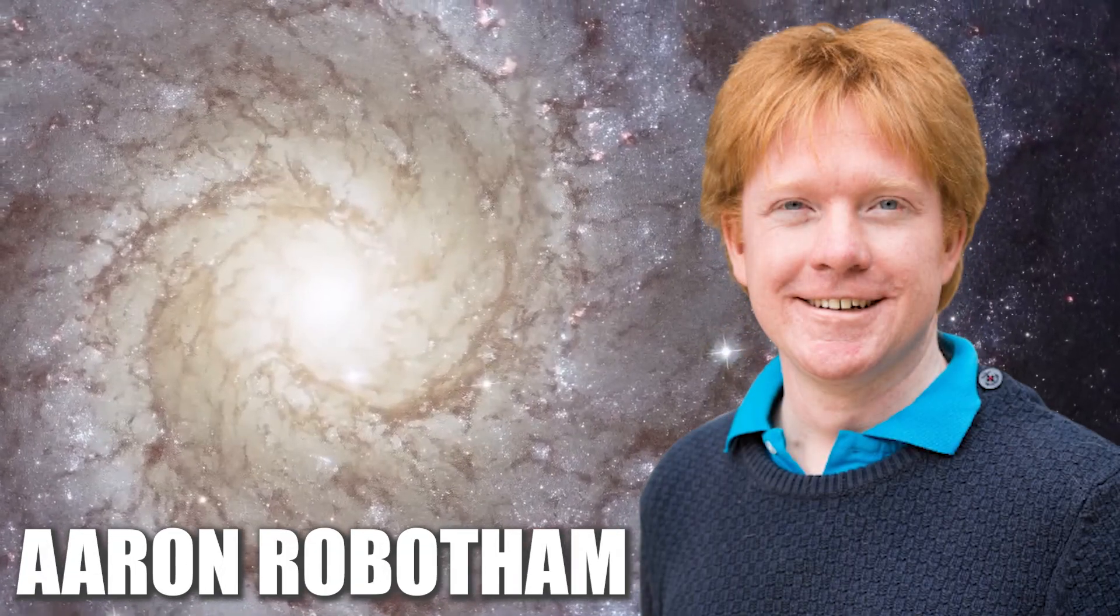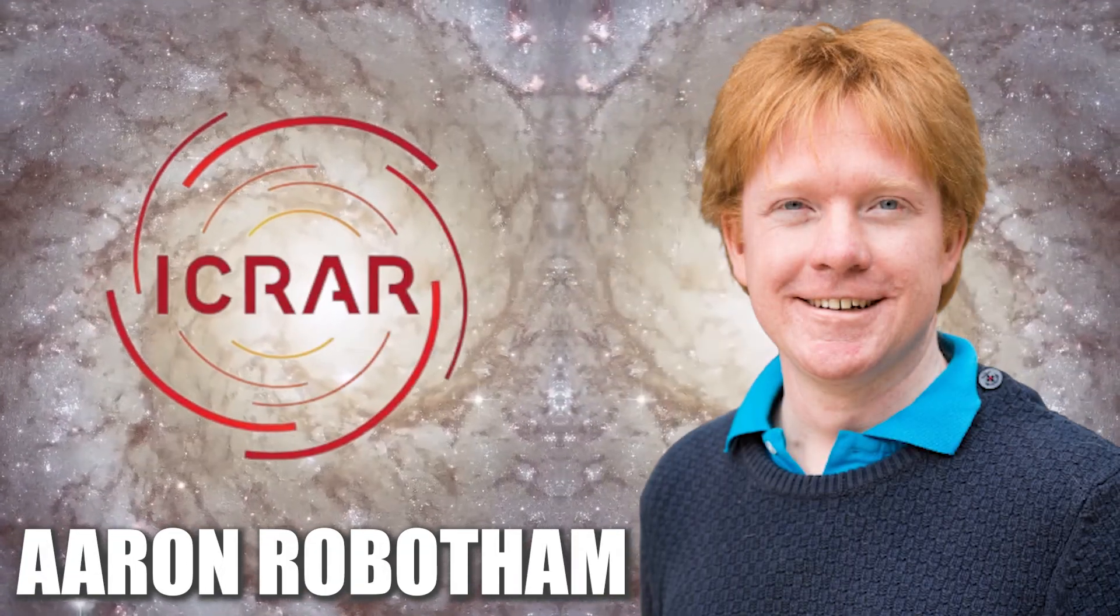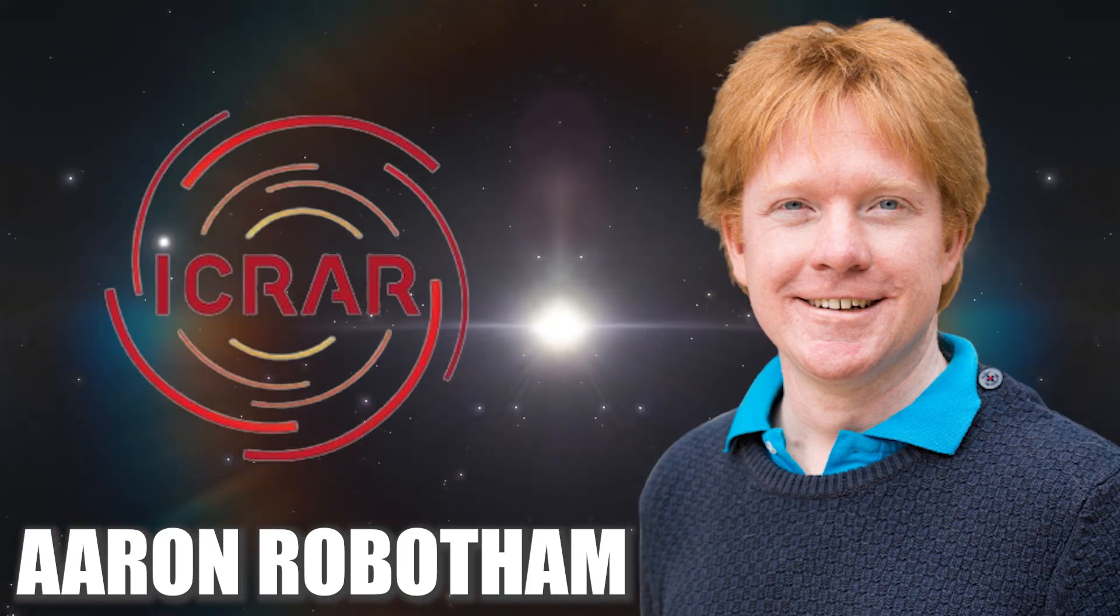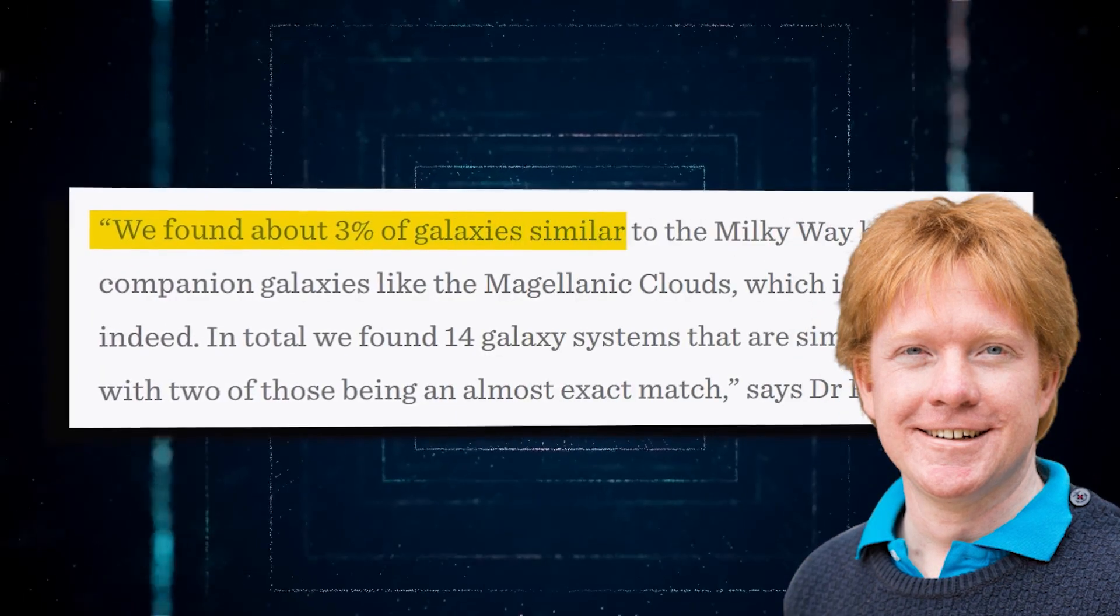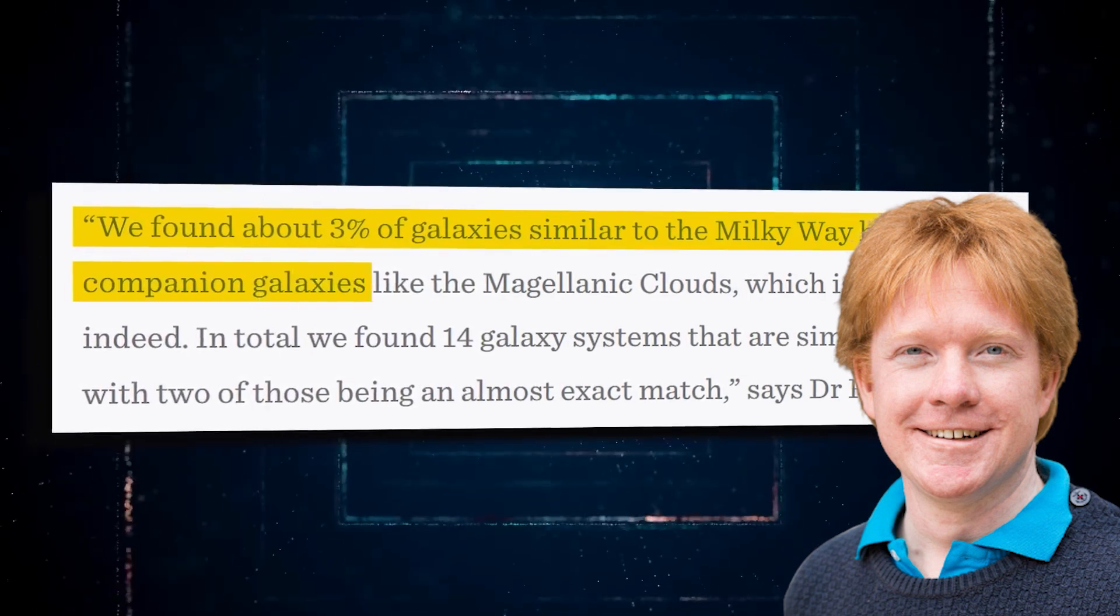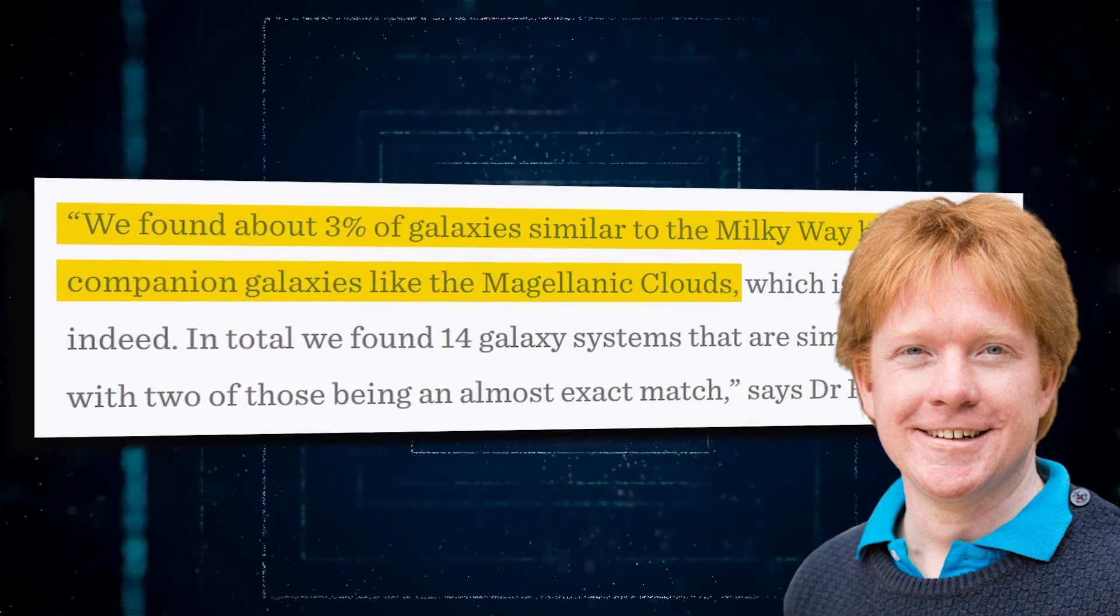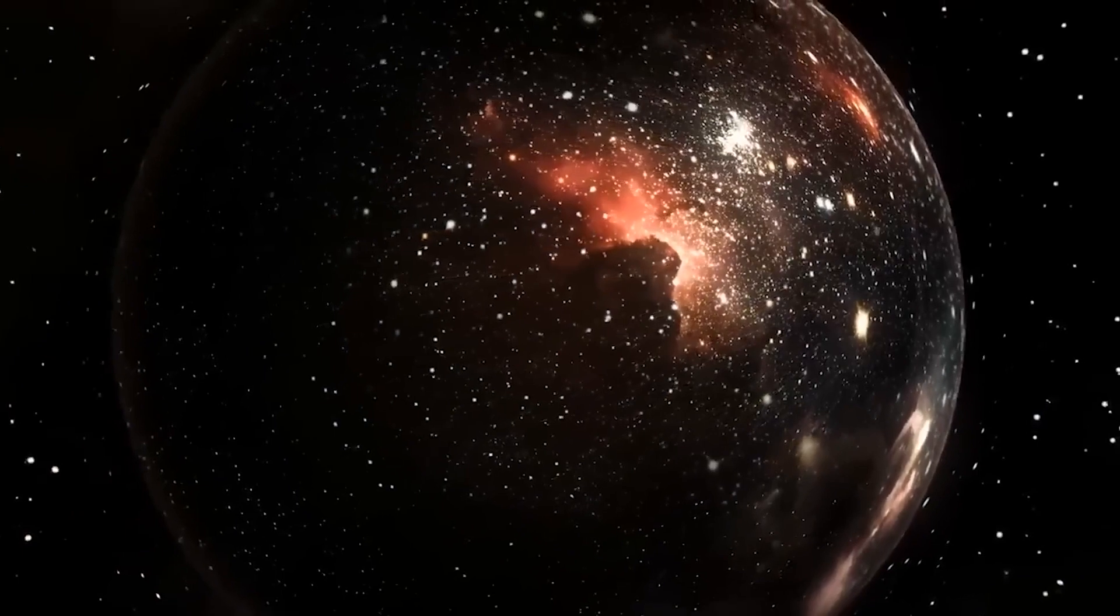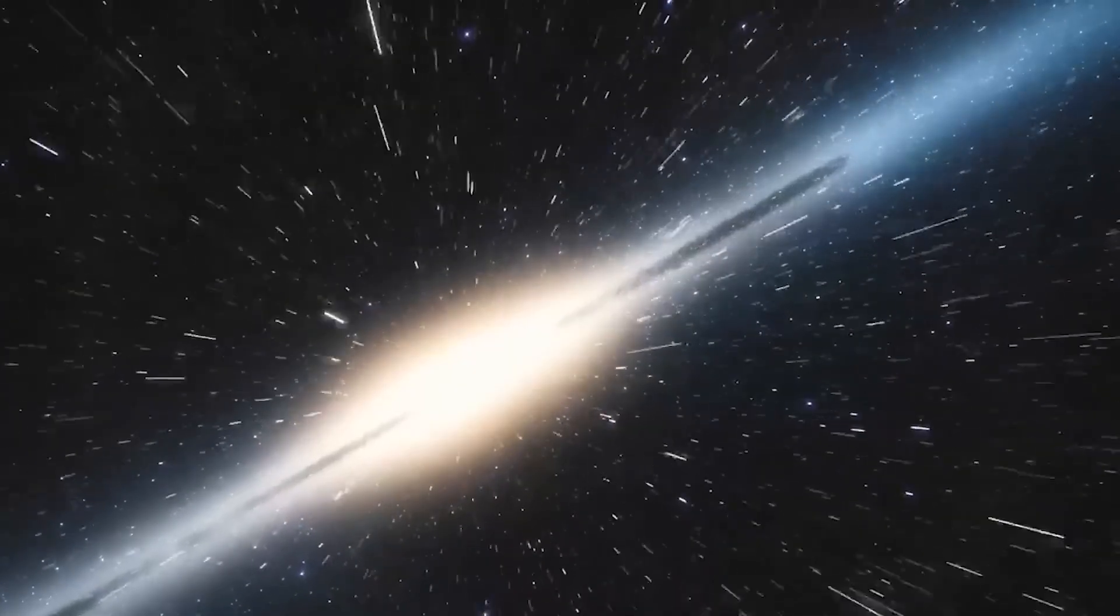According to Aaron Robotham, a study leader at the International Center for Radio Astronomy Research and the University of St. Andrews, only 3% of galaxies like the Milky Way come with companion galaxies with Magellanic clouds. This occurrence is clearly a rare one, and stumbling upon one has opened up doors to the answers to a lot of questions that have been left hanging for years together.